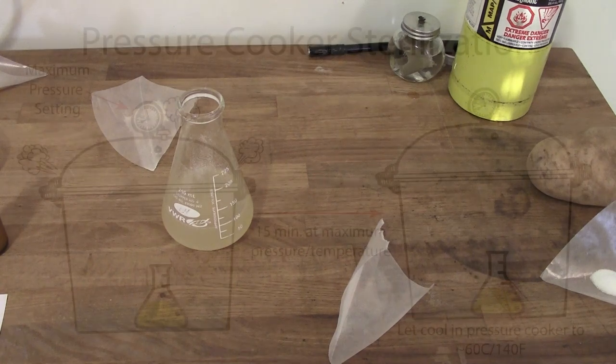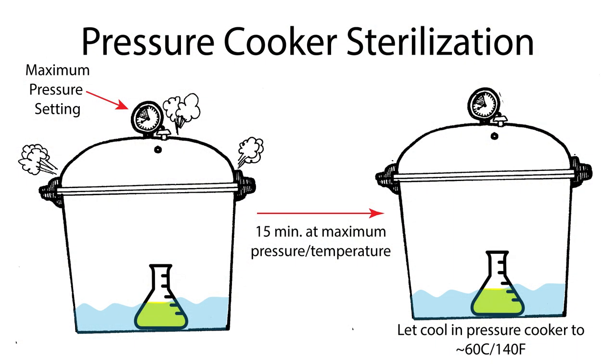So next we need to sterilize the wort. Now if you have a pressure cooker, you can achieve complete sterilization fairly simply. Take your flask, put it in the pressure cooker, and put as much water into that pressure cooker as you can without the flask floating up and tipping over. Put the pressure cooker on its highest pressure setting, bring it up to temperature, and once you get the full pressure and full temperature, let it go for 15 minutes. You can then remove it from the heat, and once that wort cools down to about 65 degrees Celsius, or 145 Fahrenheit, it's ready to go and you can now pour your plates.